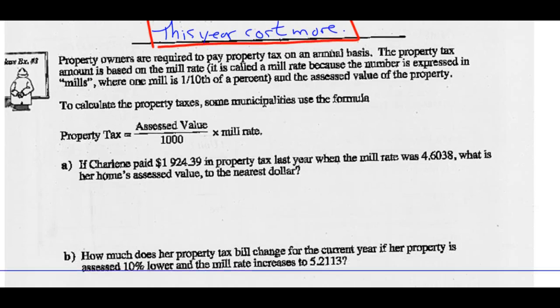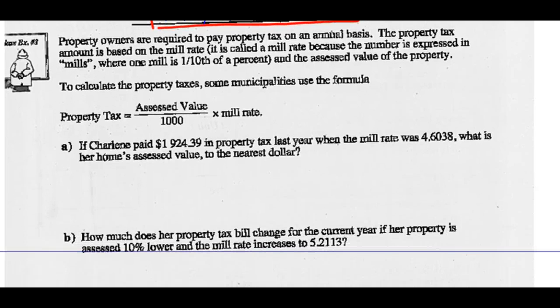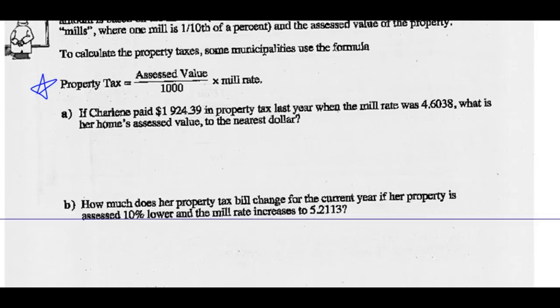Let's look at example three. Property owners are required to pay property tax on an annual basis. The property tax amount is based on the mill rate. It's called a mill rate because the number is expressed in mills where one mill is one-tenth of a percent. And the property tax is also based on the assessed value of the property. So to calculate property taxes, some municipalities use this formula. Property tax equals the assessed value divided by 1,000 multiplied by the mill rate. If Charlene paid $1,924.39 in property tax last year when the mill rate was 4.6038, what is her home's assessed value to the nearest dollar?